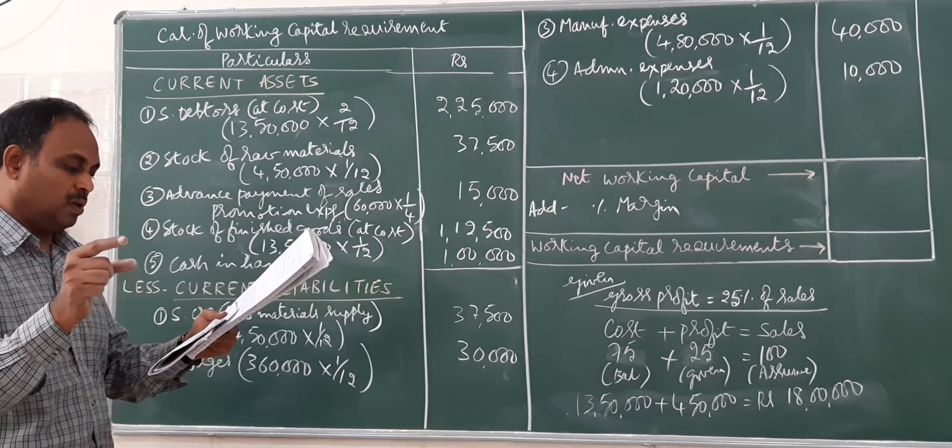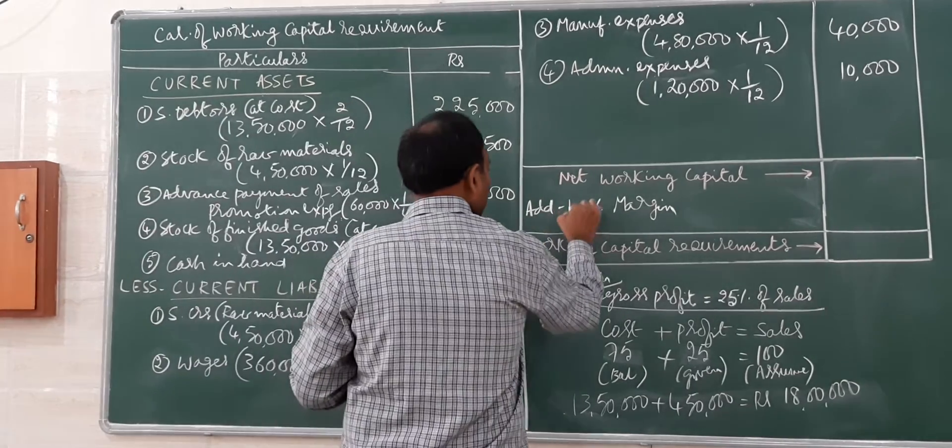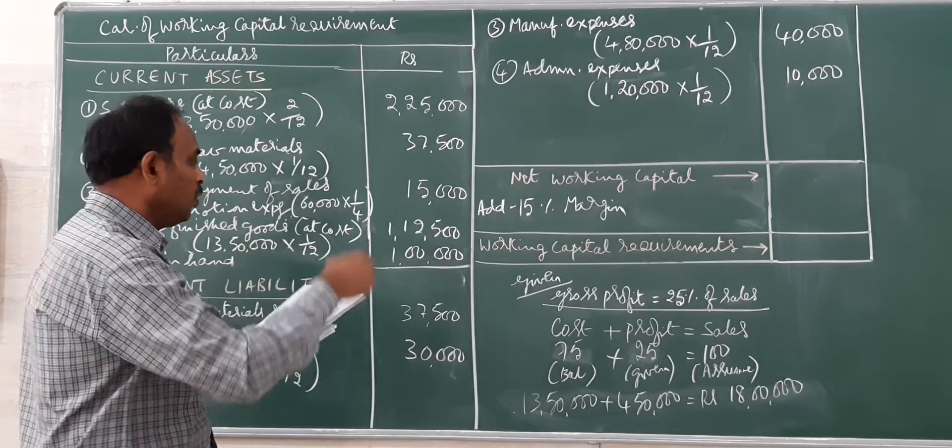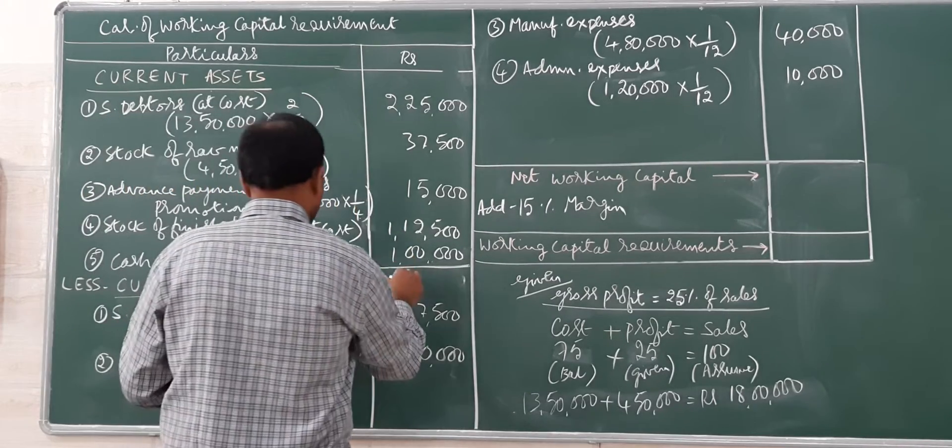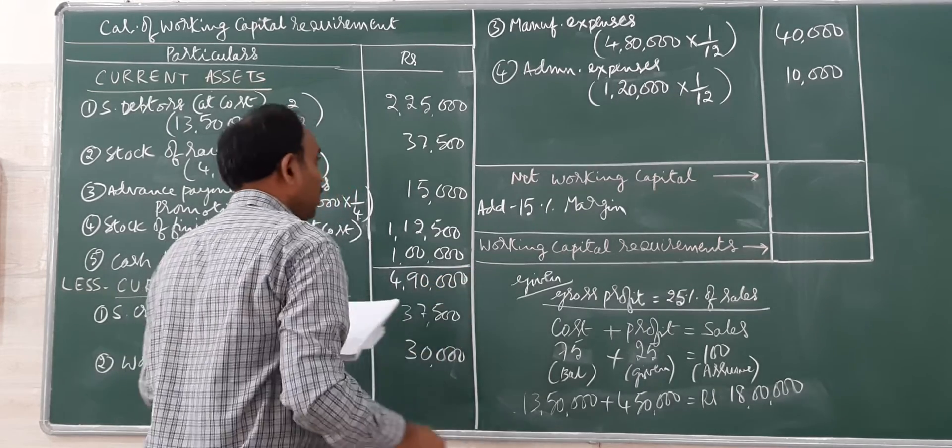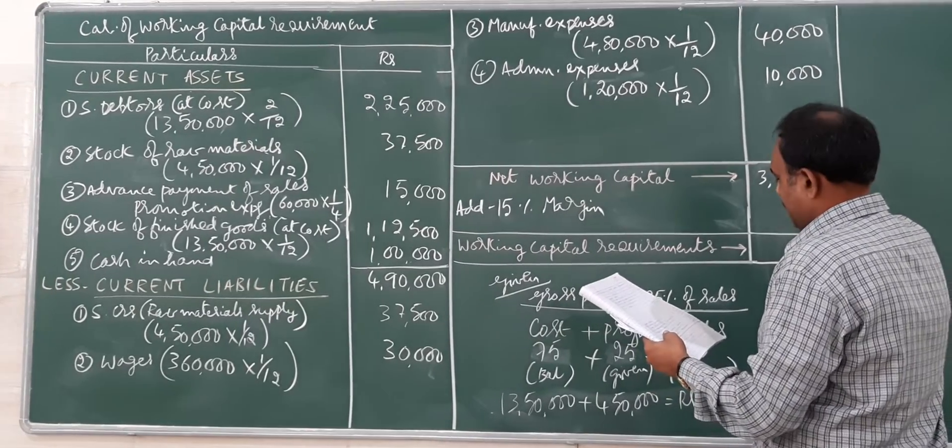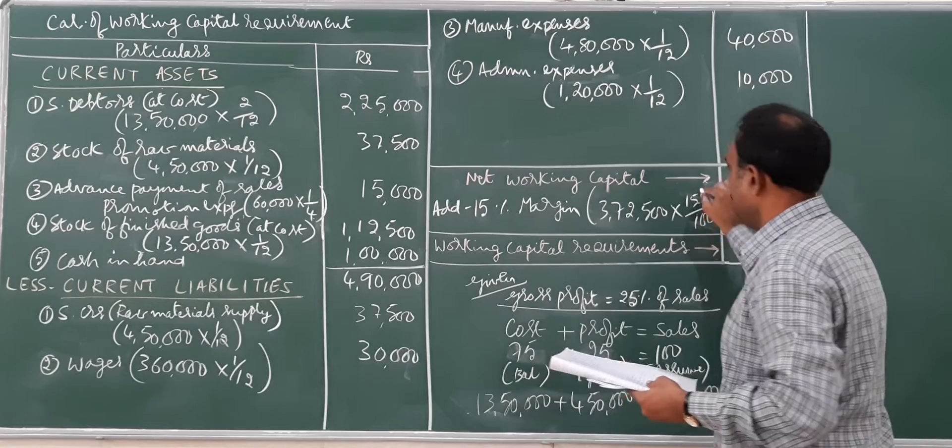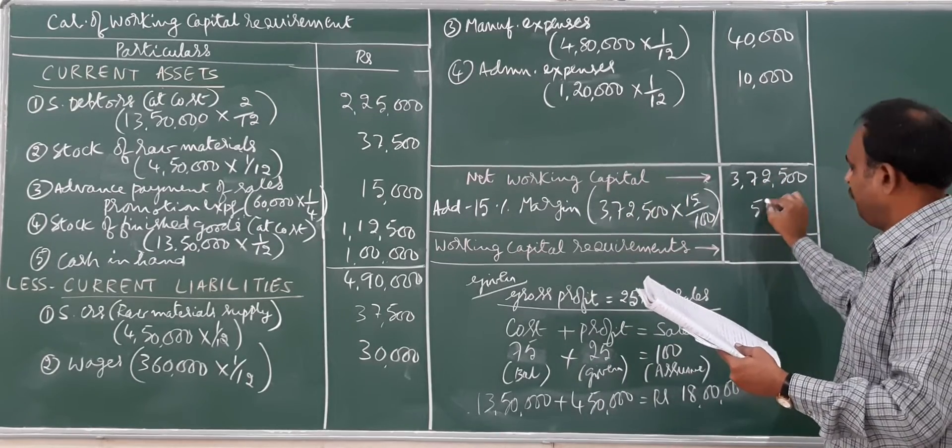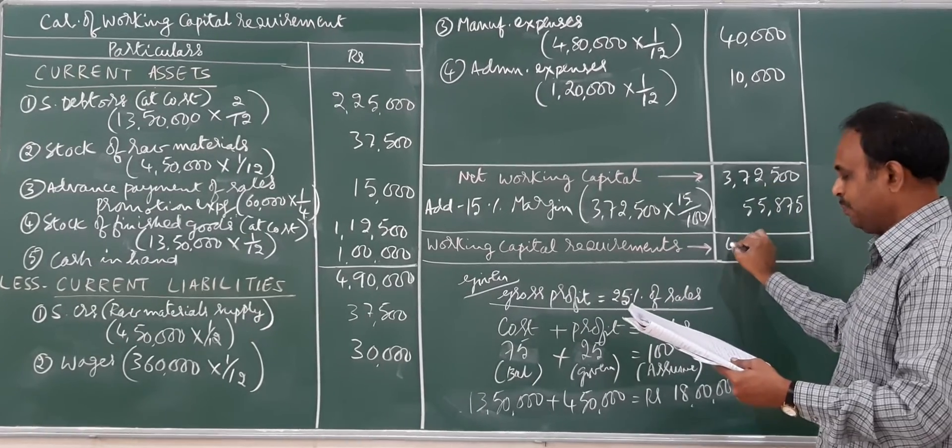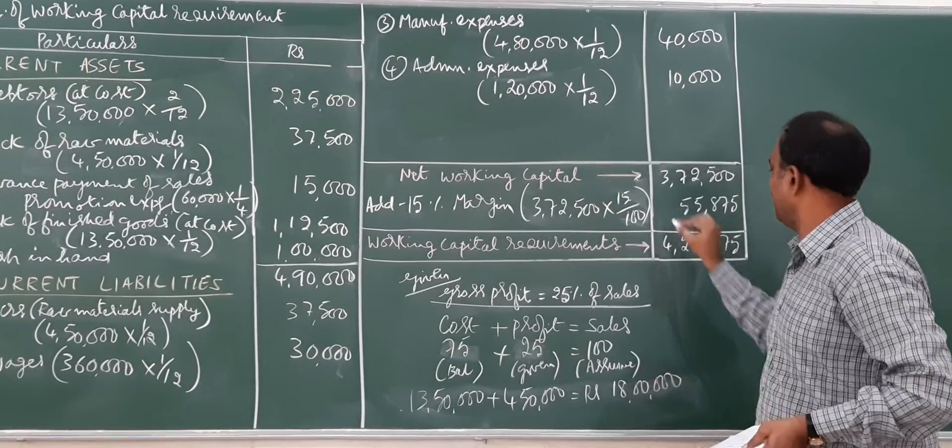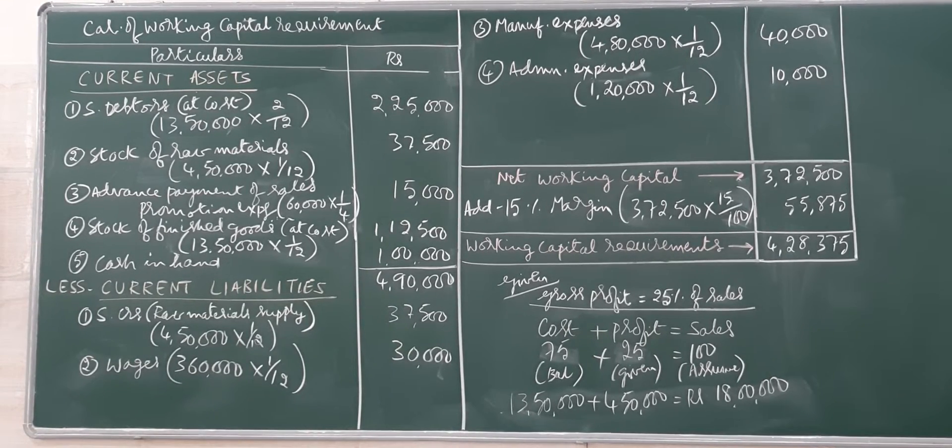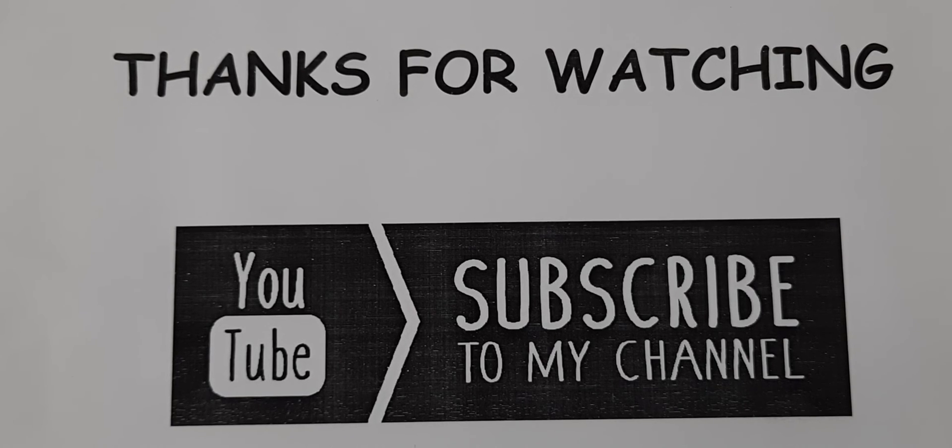On the basis of 15% safety margin, we calculate total current assets and current liabilities. Total current assets is 4 lakh 90,000. Minus all current liabilities equals 3 lakh 72,500. Contingency or margin is calculated on working capital, so 15% of this equals 55,875. Adding this, working capital requirement is 4 lakh 28,375.